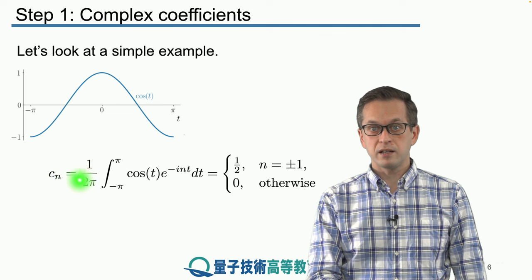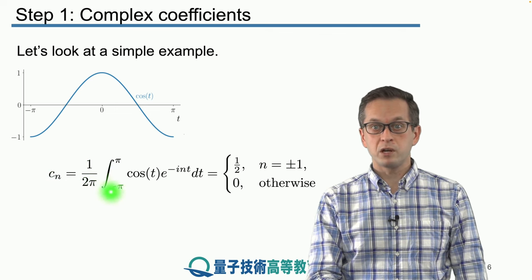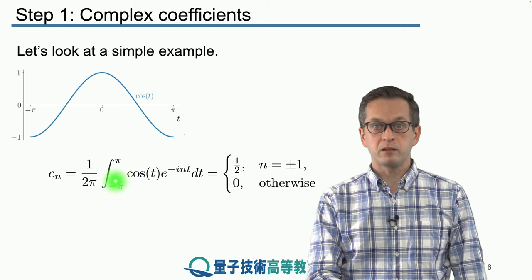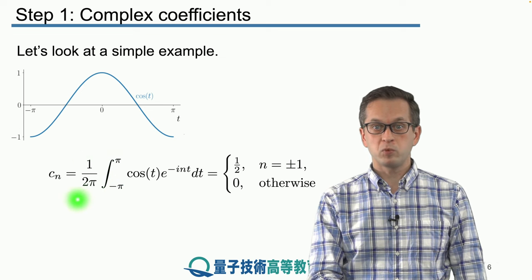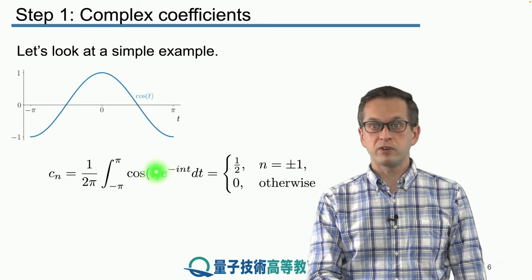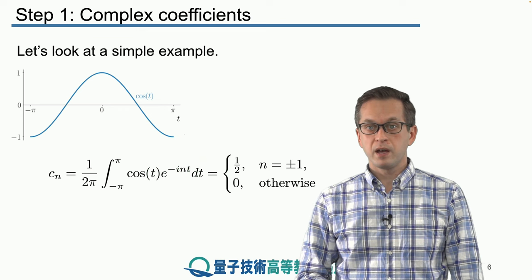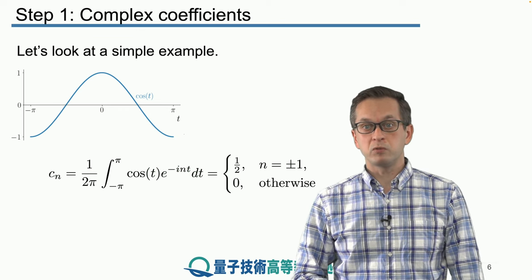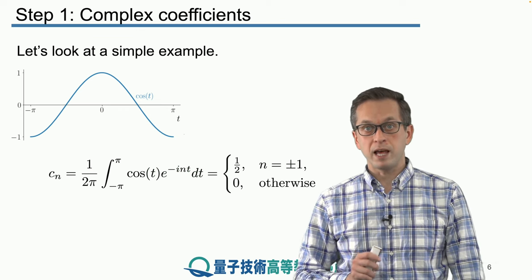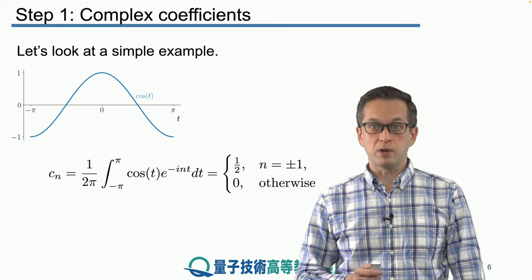We know from previous lessons that its Fourier series expansion is given by the following coefficients. Where cn is given by this following expression. We are integrating over minus π to π. So the function is 2π periodic. We are dividing by 1 over 2π. And we've got the function itself weighted by this complex exponential. And we know that all of these terms are equal to 0 except for when n is equal to plus or minus 1. And in that case, cn is equal to a half.